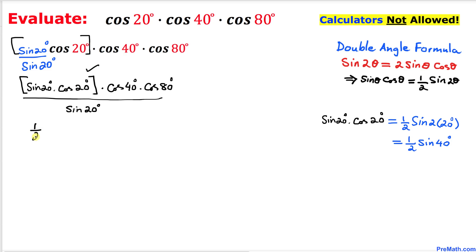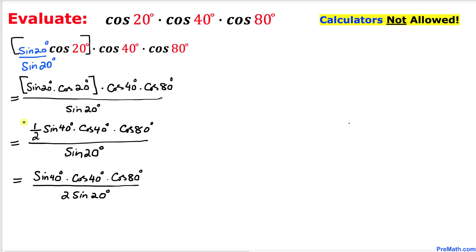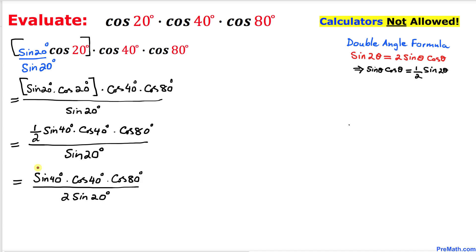So on the top I can replace that part by one-half times sine of 40 degrees, times cosine of 40 degrees, times cosine of 80 degrees, divided by sine of 20 degrees. In the next step I bring this one-half down to the denominator, so the denominator becomes 2 times sine of 20 degrees.